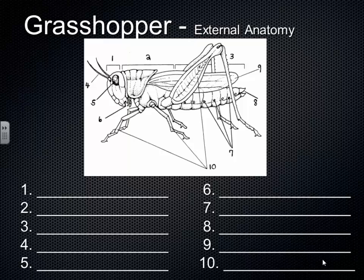This is a grasshopper — a generalized example. You might think a grasshopper is just a grasshopper, but there are actually over 10,000 species of grasshoppers alone. So we're just going to talk about a general grasshopper. They're related to crickets, cicadas, and other insects.